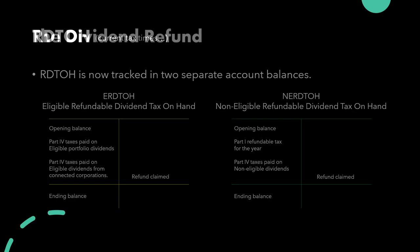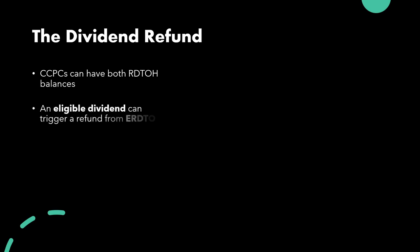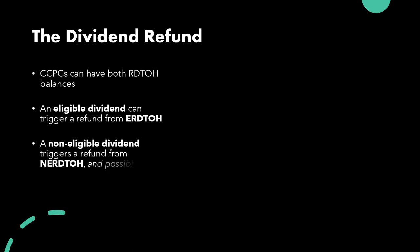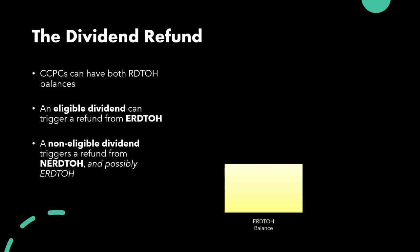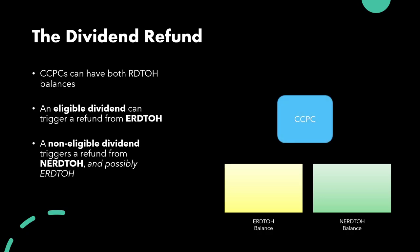Let's talk a bit more about the dividend refund. CCPCs can now have both RDTOH account balances. An eligible dividend can trigger a refund from the eligible RDTOH account, and a non-eligible dividend triggers a refund from the non-eligible RDTOH account, and possibly eligible RDTOH. Imagine that we have a balance in an eligible RDTOH account — it'll be represented by this yellow box. We can also have, for the same CCPC, a non-eligible RDTOH balance, represented by a green box.